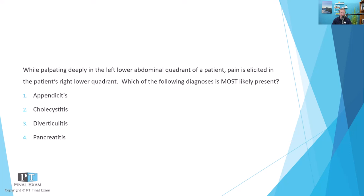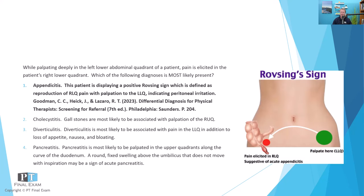This question is asking you about differential diagnosis related to the gastrointestinal system. This is what's called Rovsing's sign — where you palpate in the left lower quadrant and elicit pain in the right lower quadrant. This is indicative of acute appendicitis, or certainly peritonitis associated with appendicitis. What's happening is that as you palpate on the left lower quadrant and elicit pain on the right lower quadrant, you're producing tension in the peritoneal lining, reproducing pain in the right lower quadrant. That is the definition of Rovsing's sign.